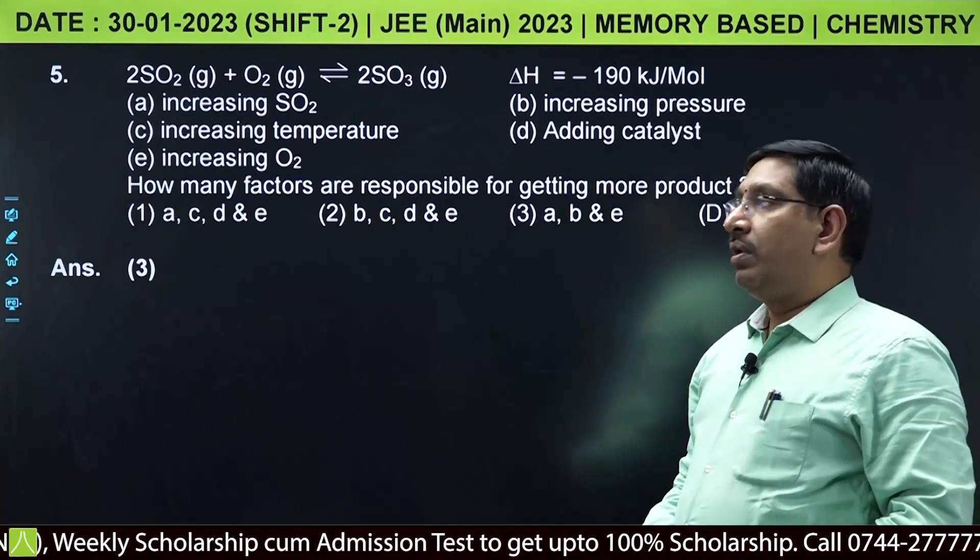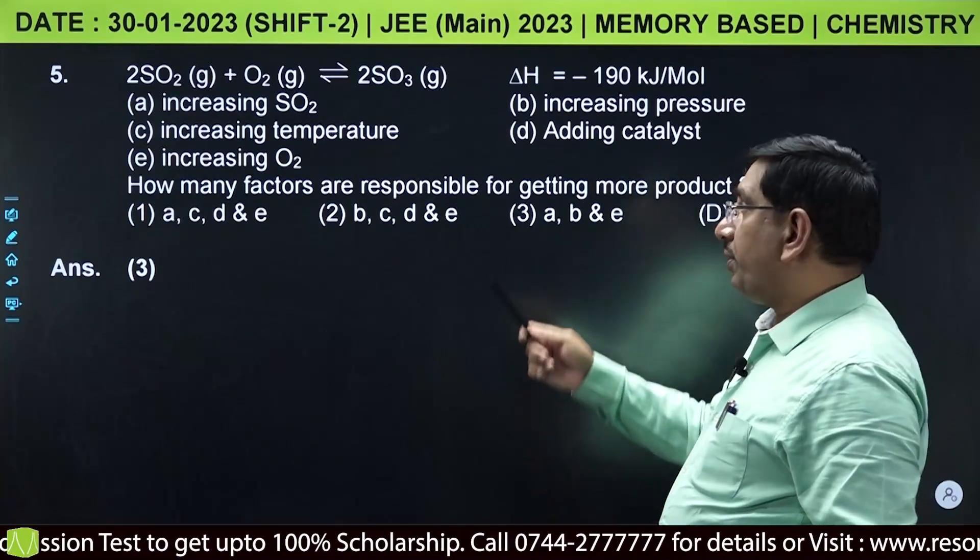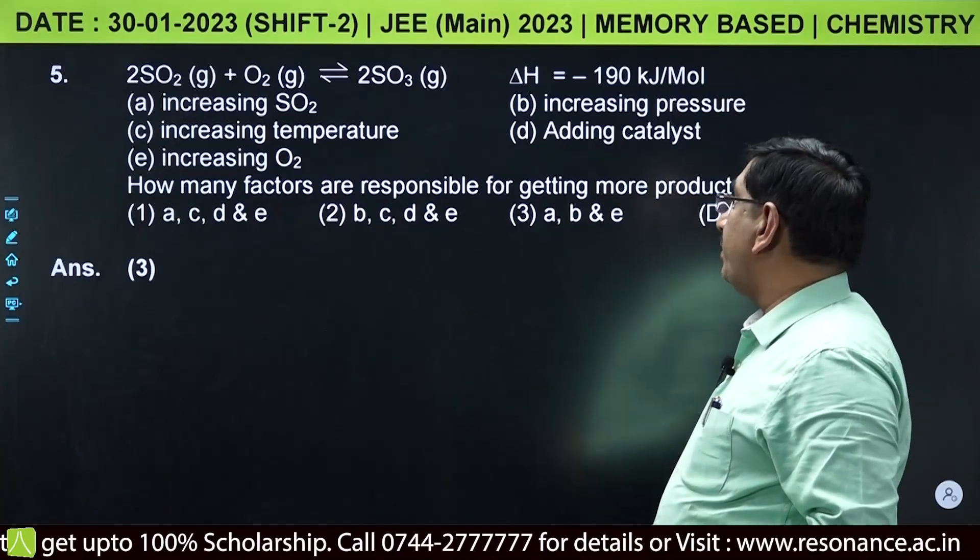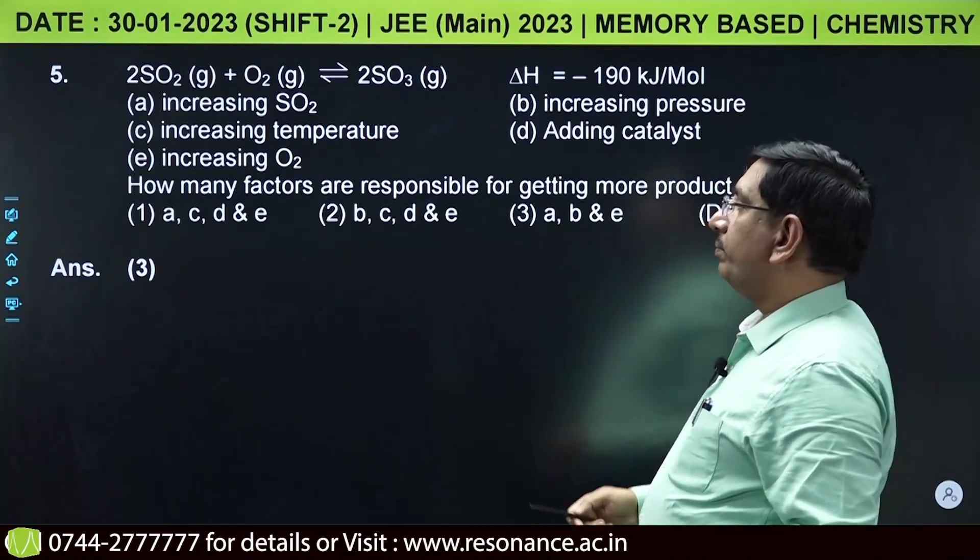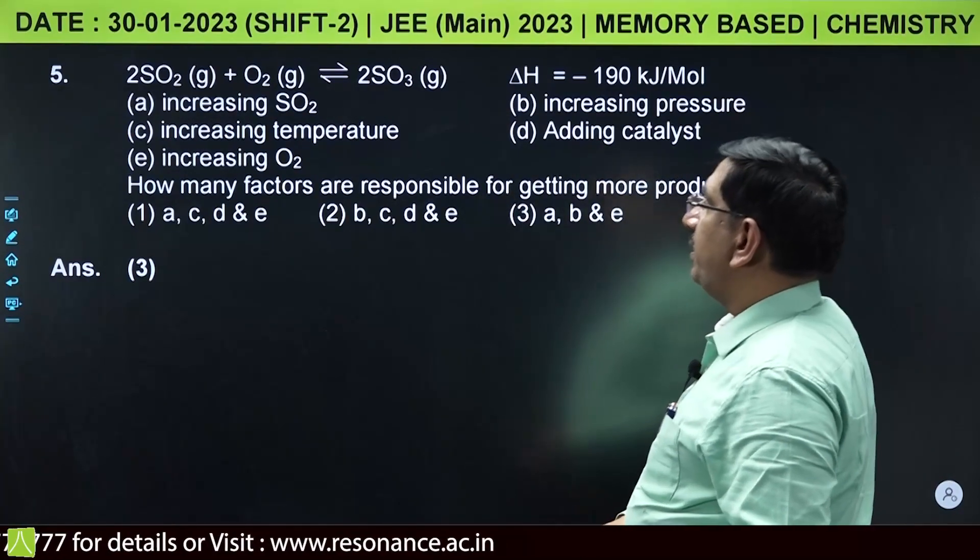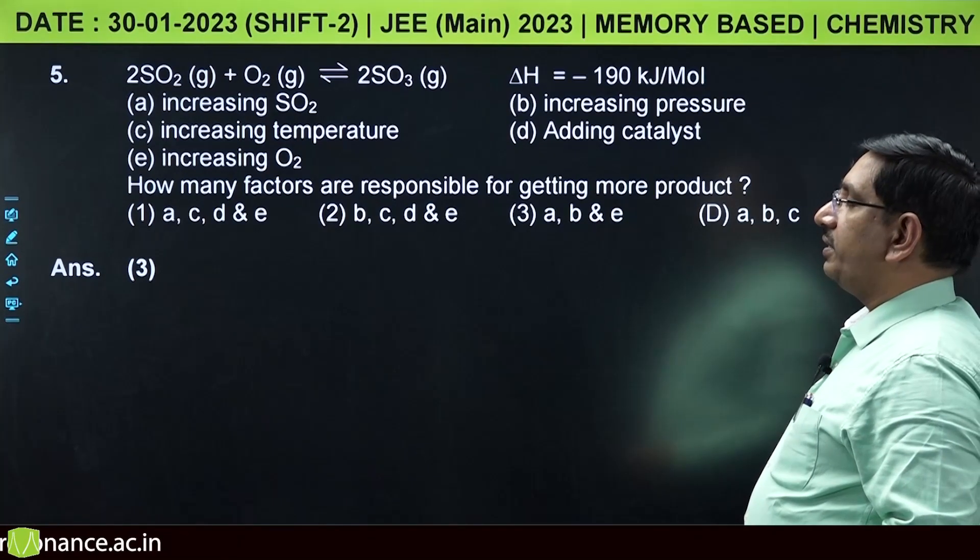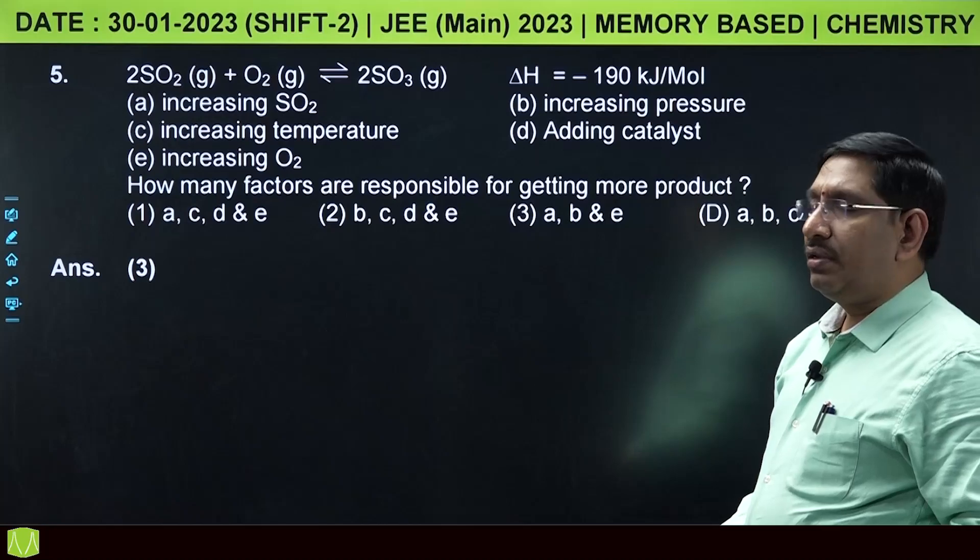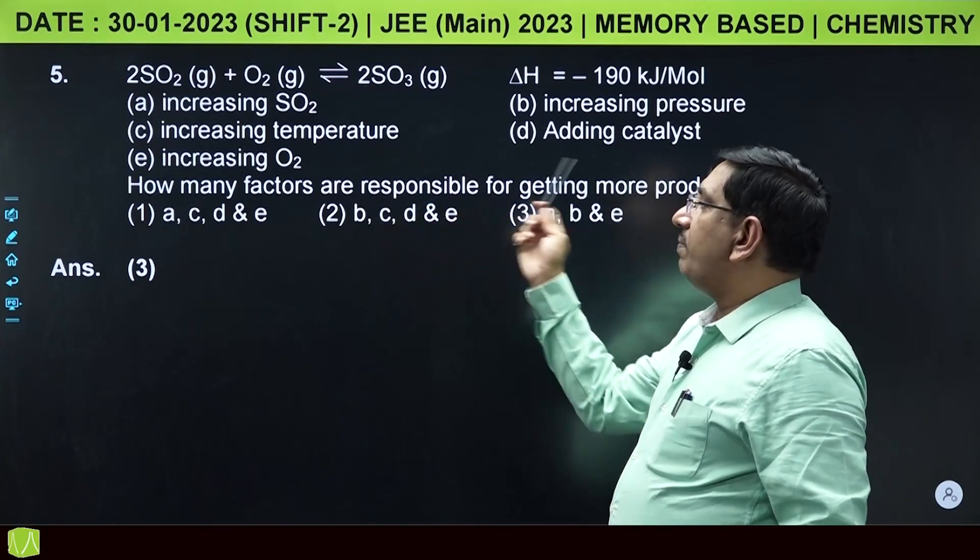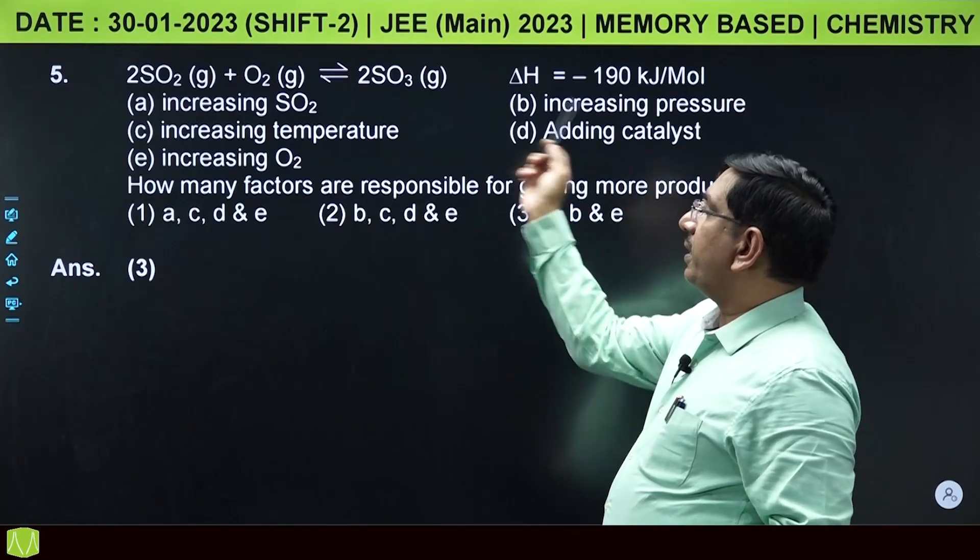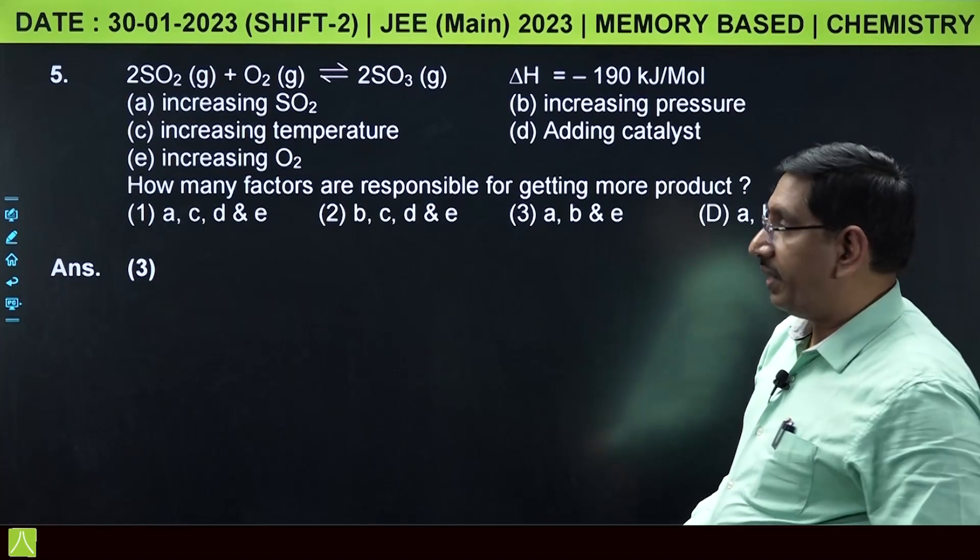This is from chemical equilibrium. The equation given is 2SO2 plus O2 gives 2SO3, delta H is minus 190 kilojoule per mole. It is an exothermic reaction. The factors given are: increasing SO2, increasing pressure, increasing temperature, adding catalyst, and increasing oxygen. Now for the forward reaction, how many factors are responsible?